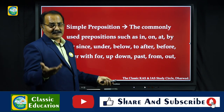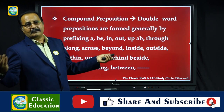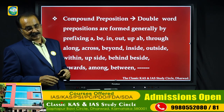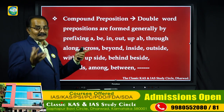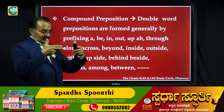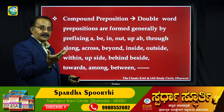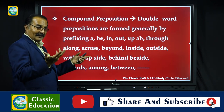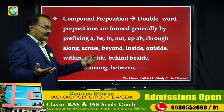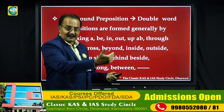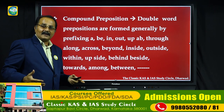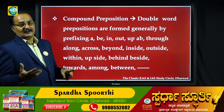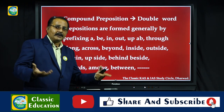Now, compound prepositions are double-word prepositions. They are generally formed by prefixing 'a', 'b', 'in', 'out', 'up' to words — for example: 'along', 'across', 'beyond', 'beside', 'through'. These are called compound prepositions, and they are used in a variety of ways.